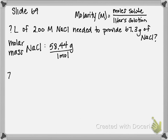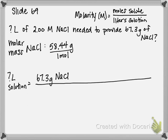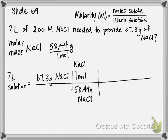Ultimately, what we're looking for is liters of solution. We're going to start with 67.3 grams of sodium chloride. We're going to use molar mass — divide by molar mass — to get us into moles. That's going to cancel out grams and grams, and now we're in moles of sodium chloride.